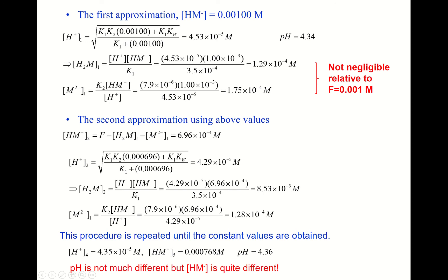Using k1 we recalculate [H₂M], and from k2 we recalculate [M²⁻]. They are different from the previous iteration. This process is repeated until constant values are obtained. After four approximations, we get sufficiently constant values — a fifth or sixth iteration may not be needed. Our final proton concentration is 4.35×10⁻⁵ molar.